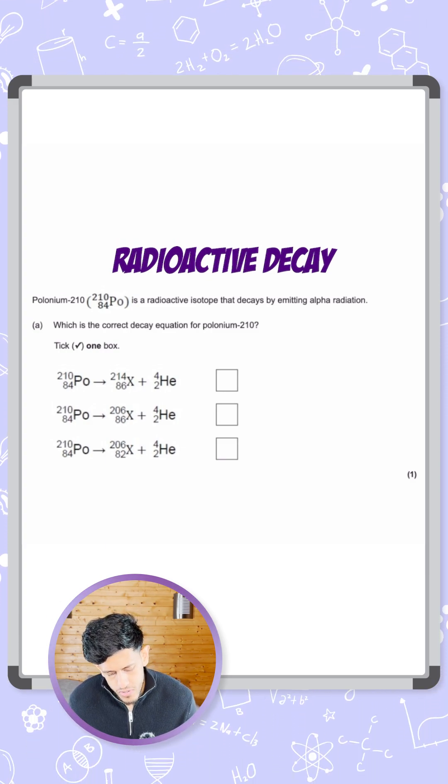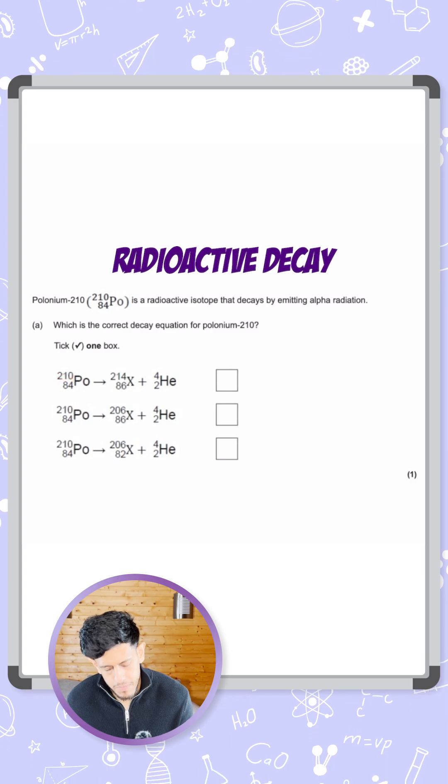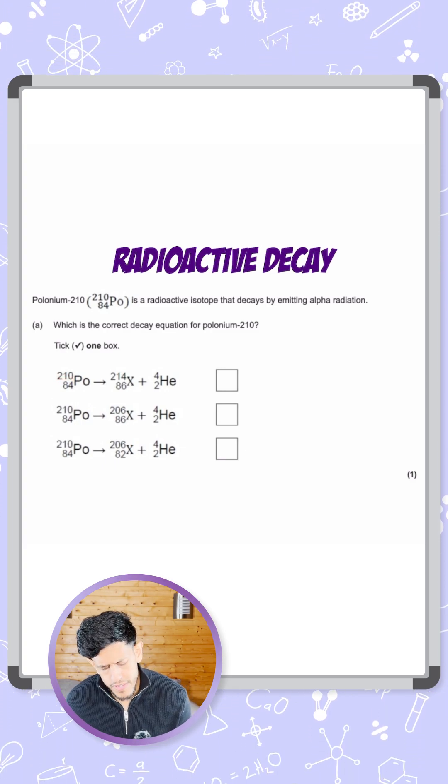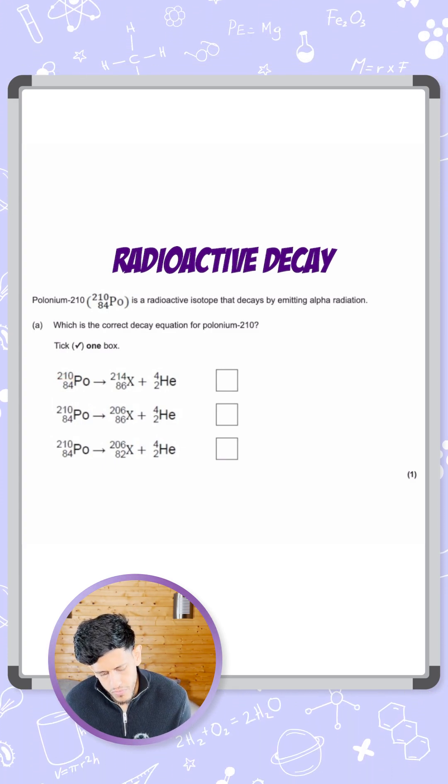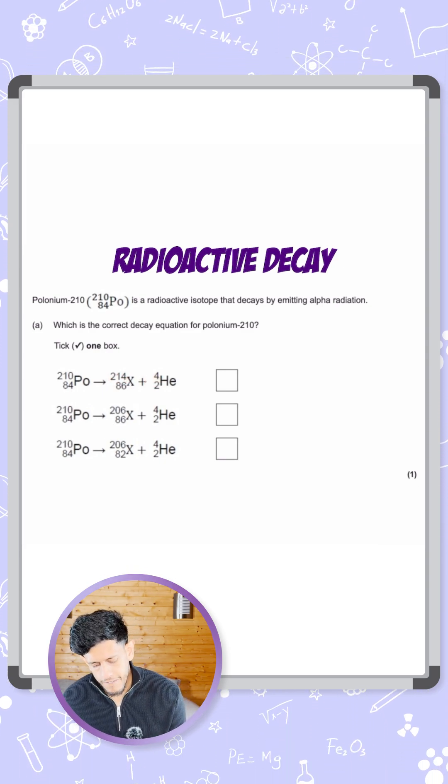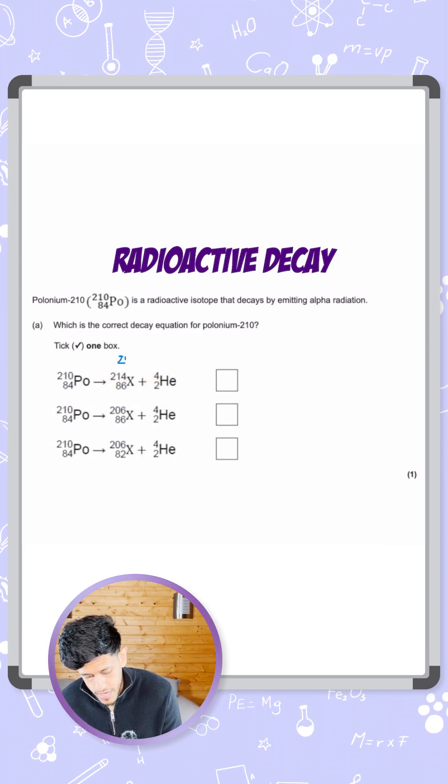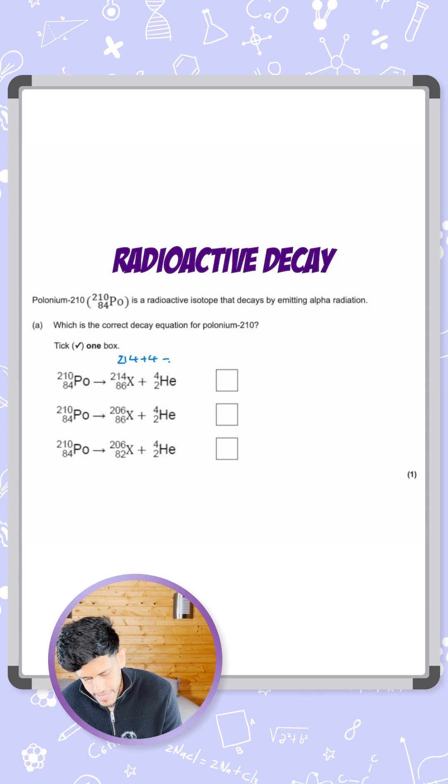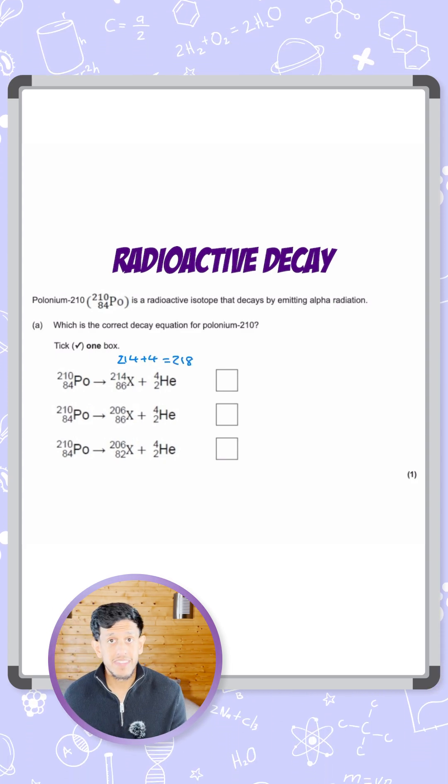So we can see there's 210 as the mass number for polonium. If we look at the first example, we've got then 214 for X and 4 for the helium. So if I added those, 214 plus 4 is 218, so that's not 210, so that's not going to work.